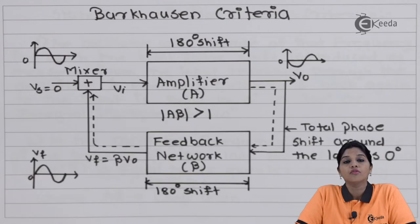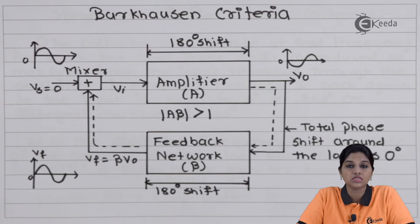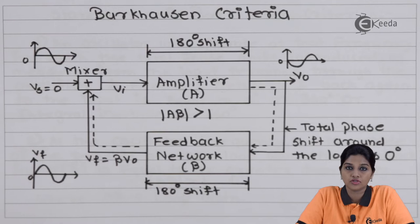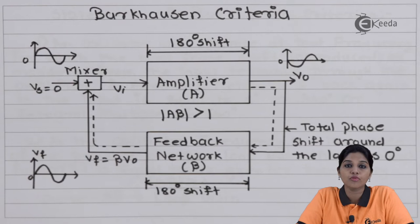We know that an oscillator is basically an amplifier which produces output oscillations without any AC input signal, but by using positive feedback. However, it is not always the case that positive feedback always provides sustained or proper oscillations — oscillations provided by the circuit must have a fixed frequency and magnitude. We can produce sine wave or AC signals at the output of oscillators, so oscillators are basically AC signal generators that use positive feedback.